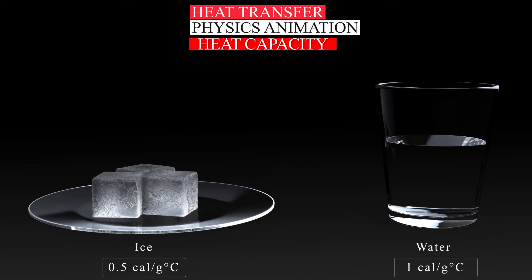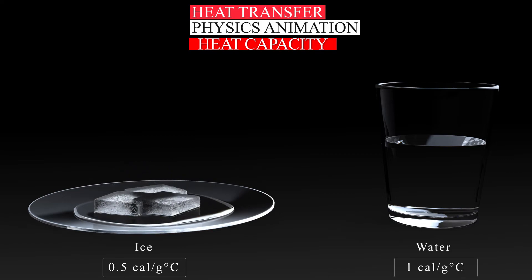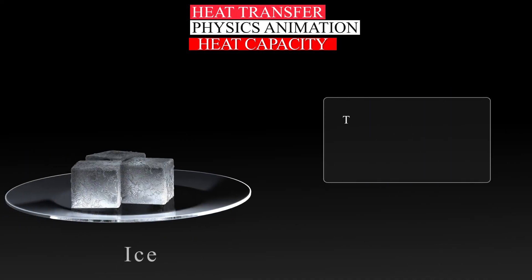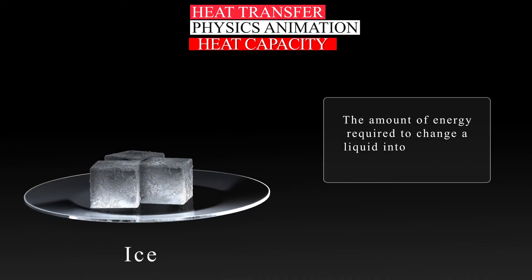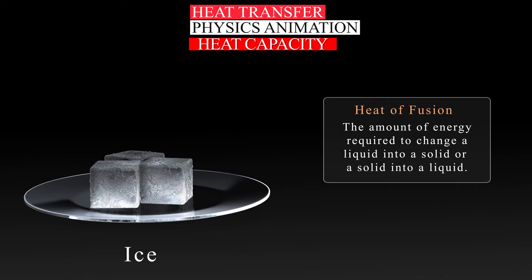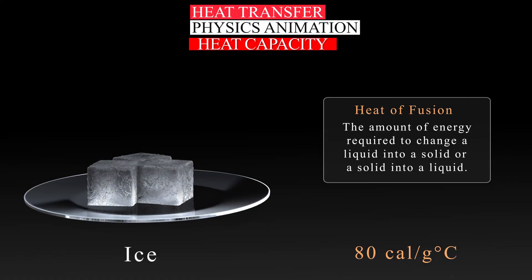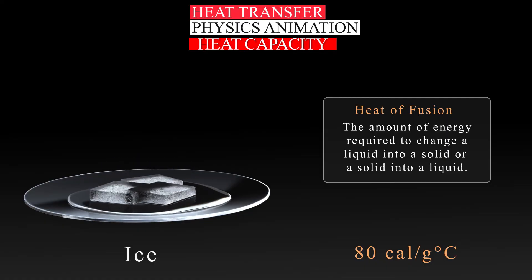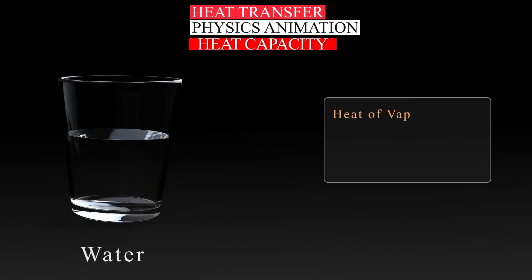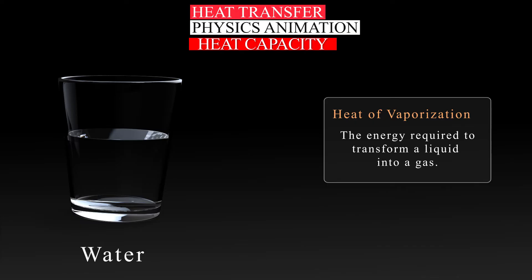The processes of phase change between solid, liquid, and gas also require a specific amount of heat energy. The amount of energy required to change a liquid into a solid, or a solid into a liquid, is known as heat of fusion. The amount of heat required to change 1 gram of ice to water is 80 calories. Similarly, the heat of vaporization is the energy required to transform a liquid into a gas. It requires 540 calories to change 1 gram of liquid water into a gas.